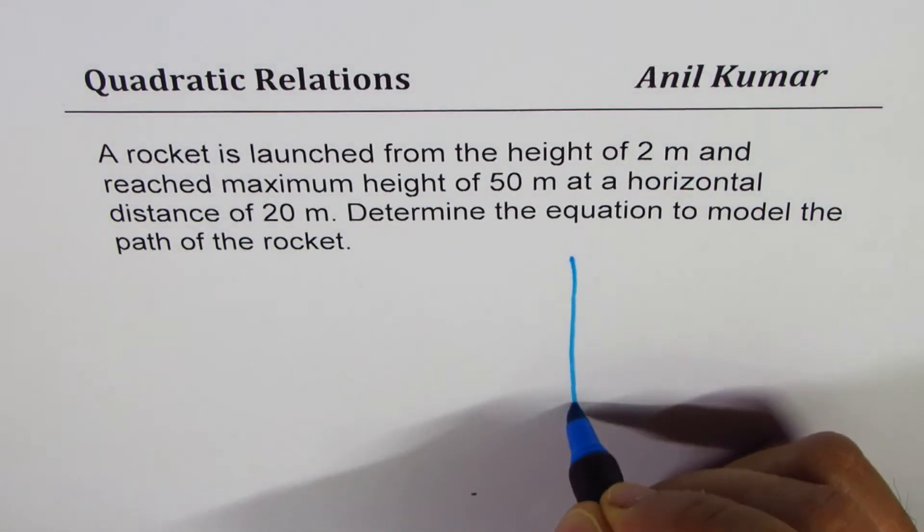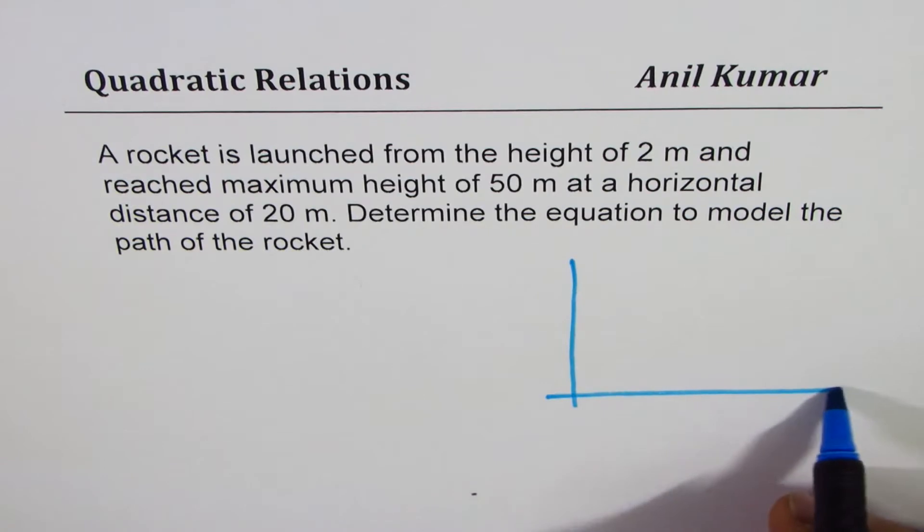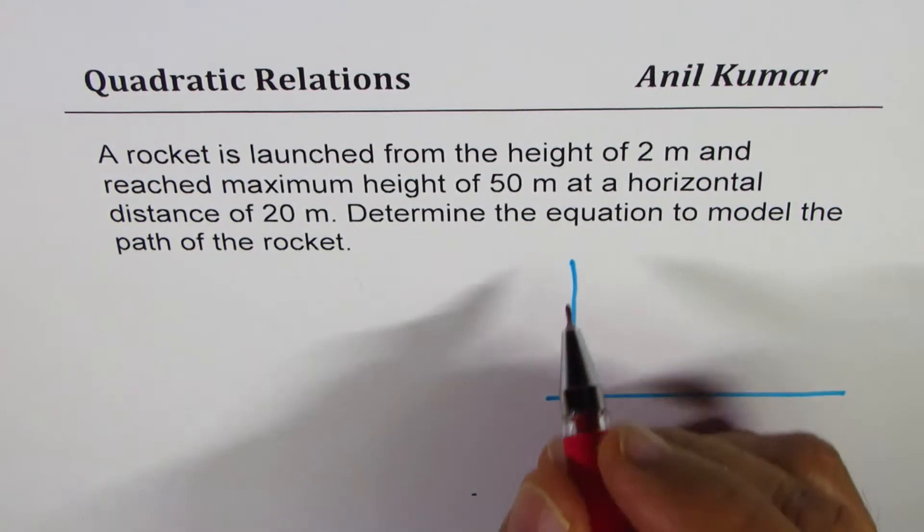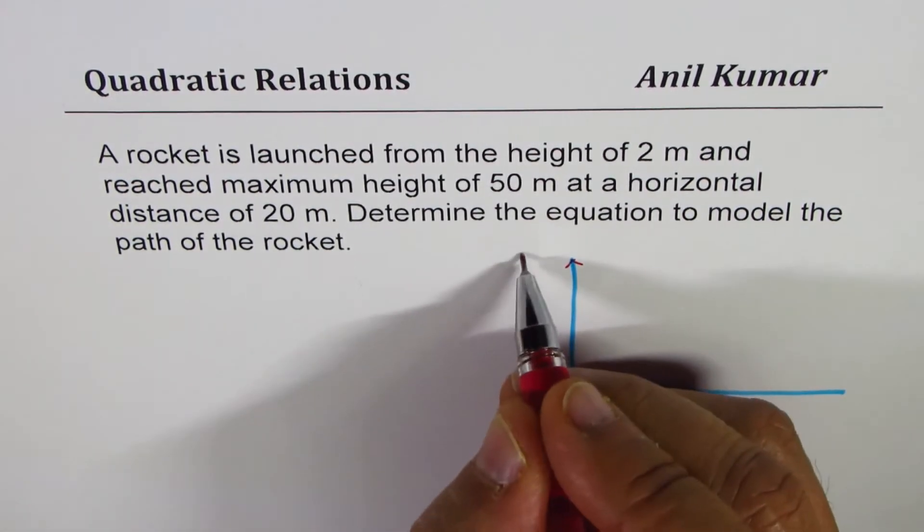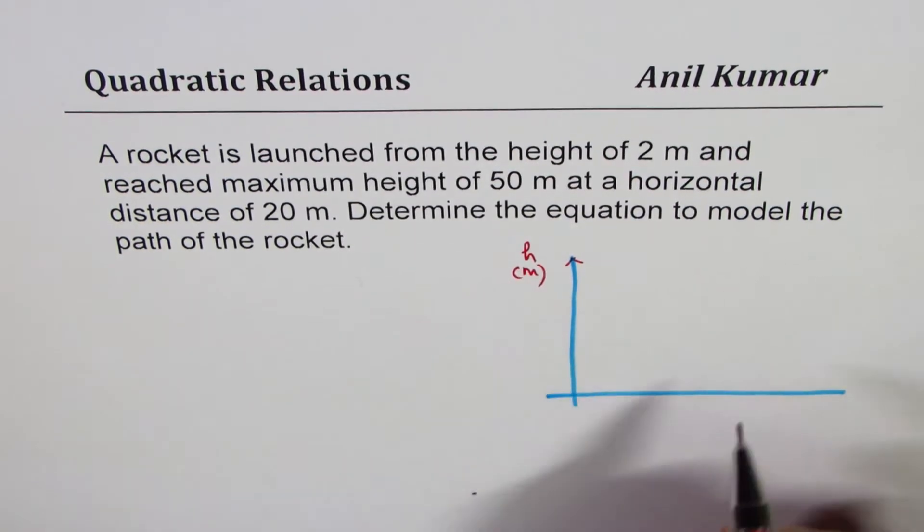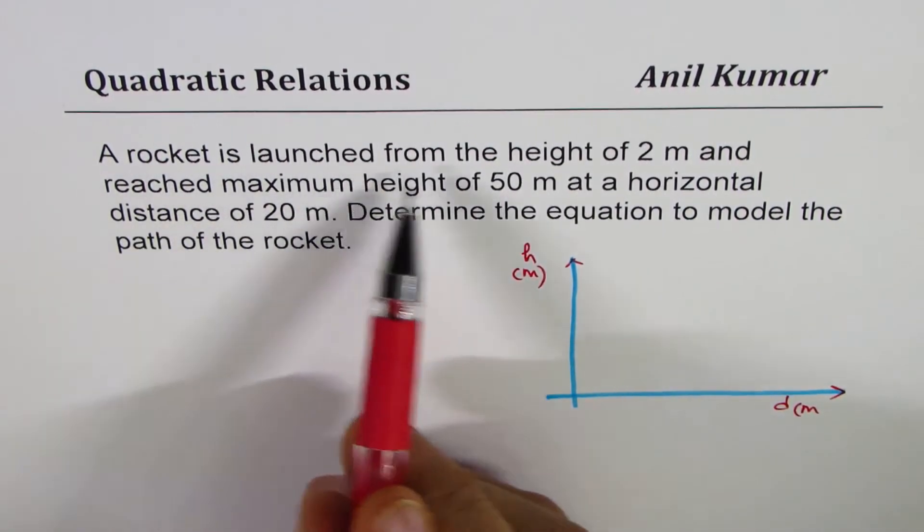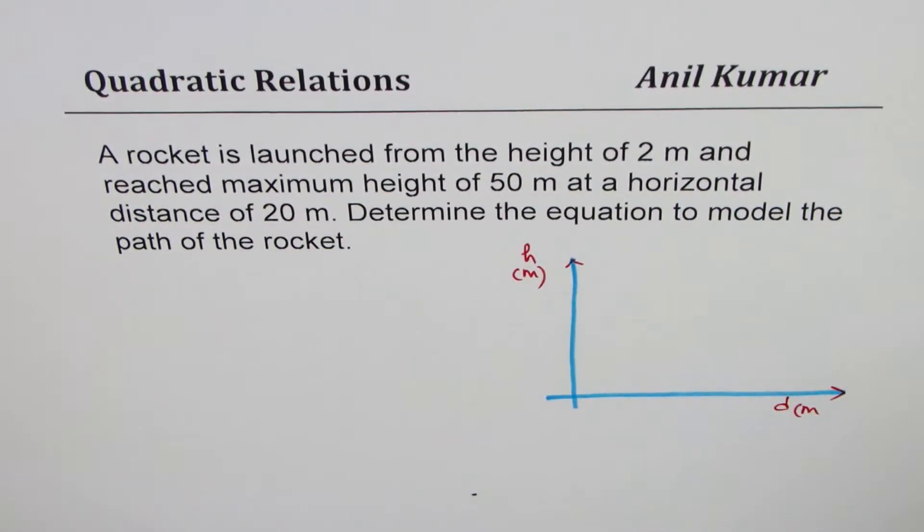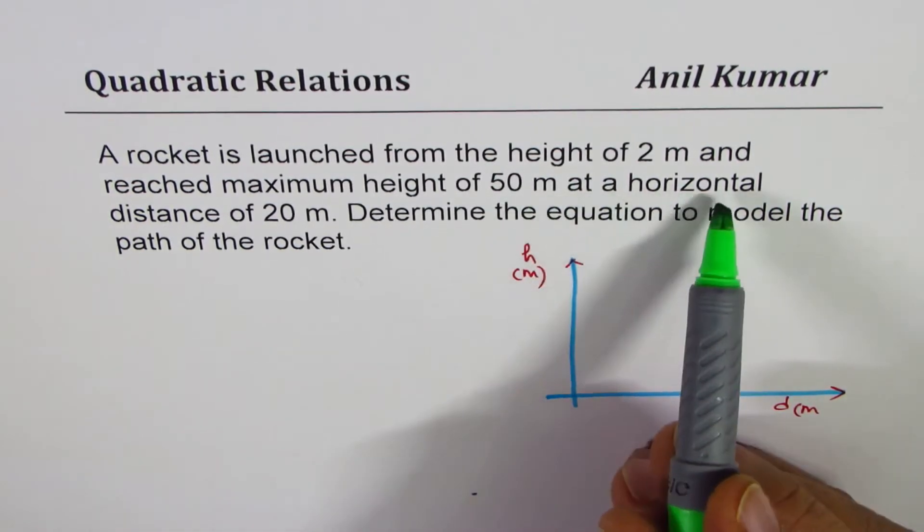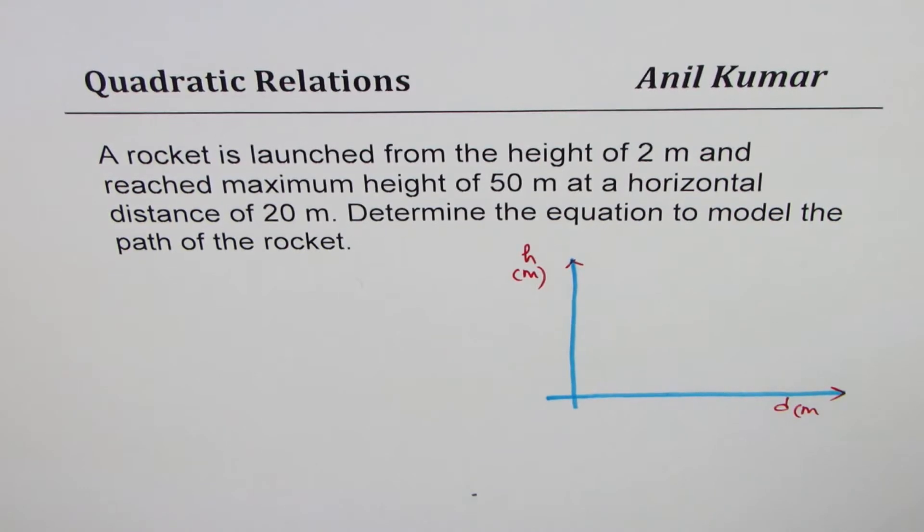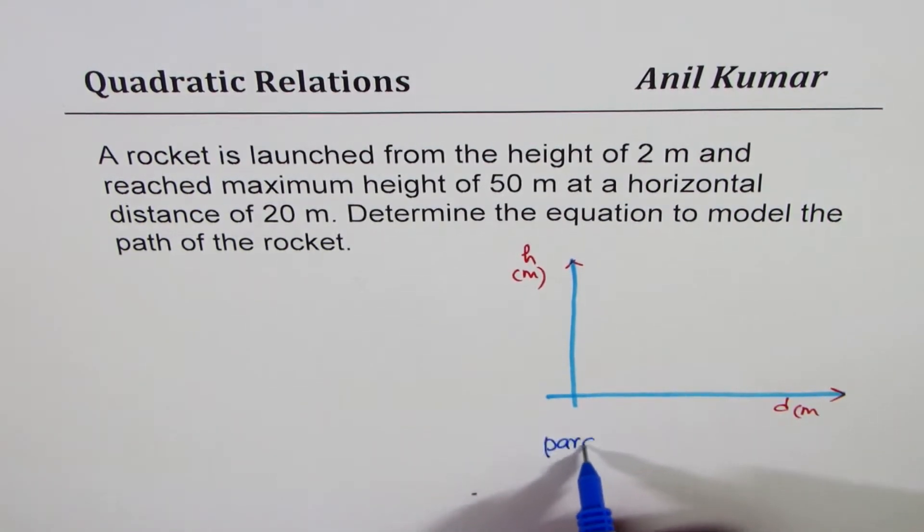Let us sketch the path here and then we will model. What we are given here is height in meters with respect to distance in meters. It says the rocket has launched from the height of 2 meters and reached a maximum height of 50 meters at a horizontal distance of 20 meters. Our assumption here is that it follows a parabolic path.